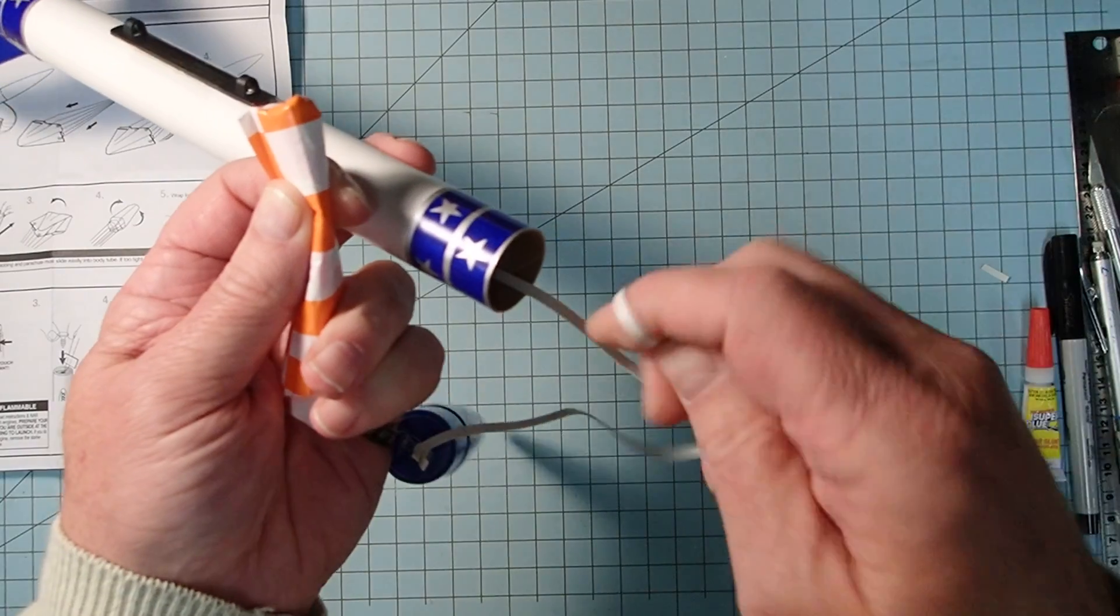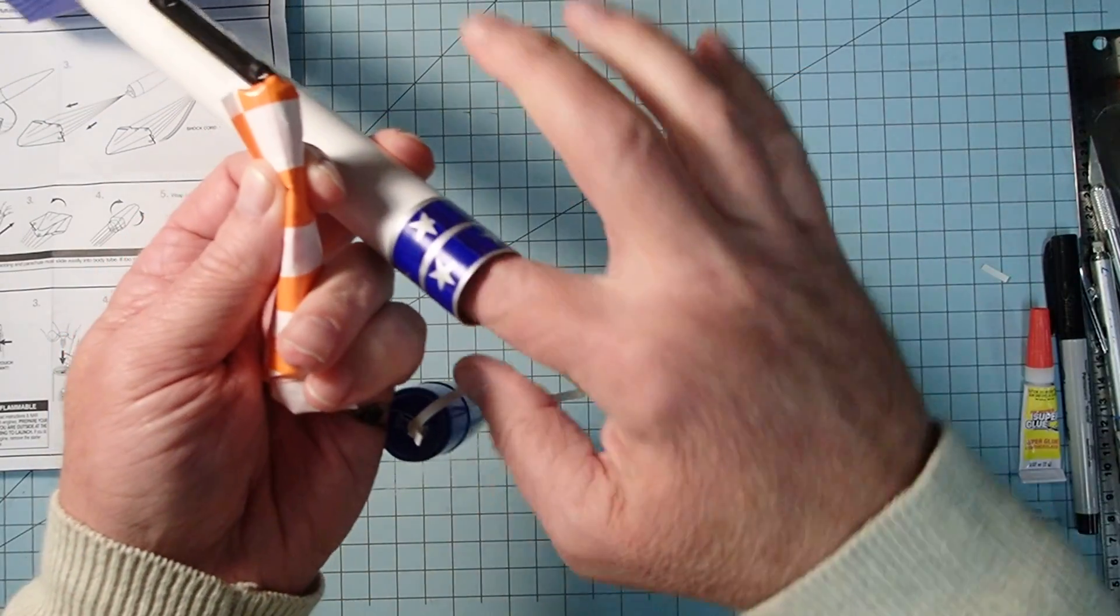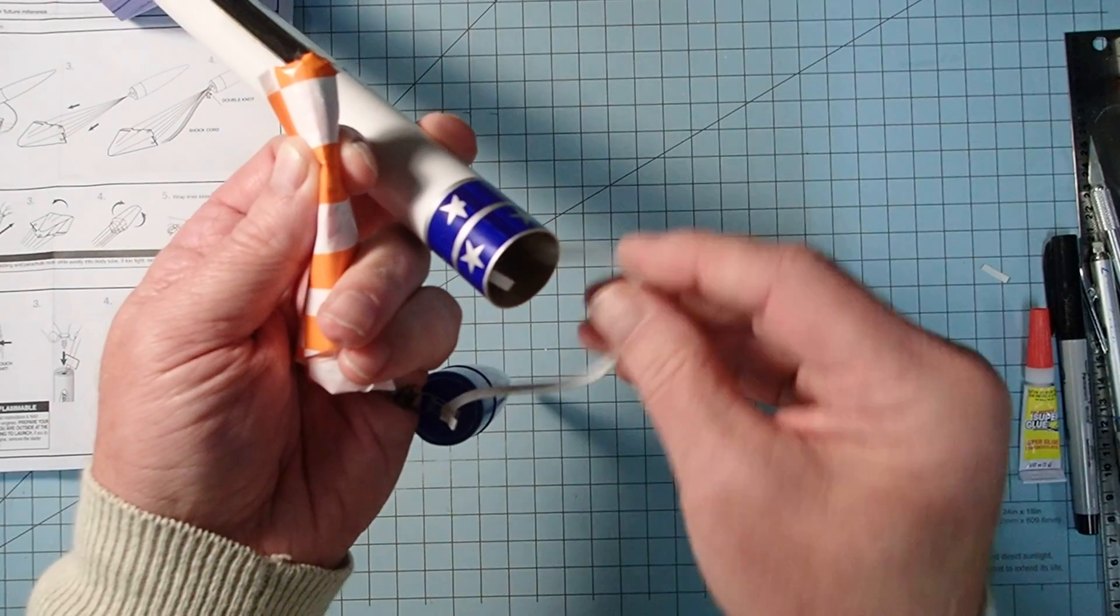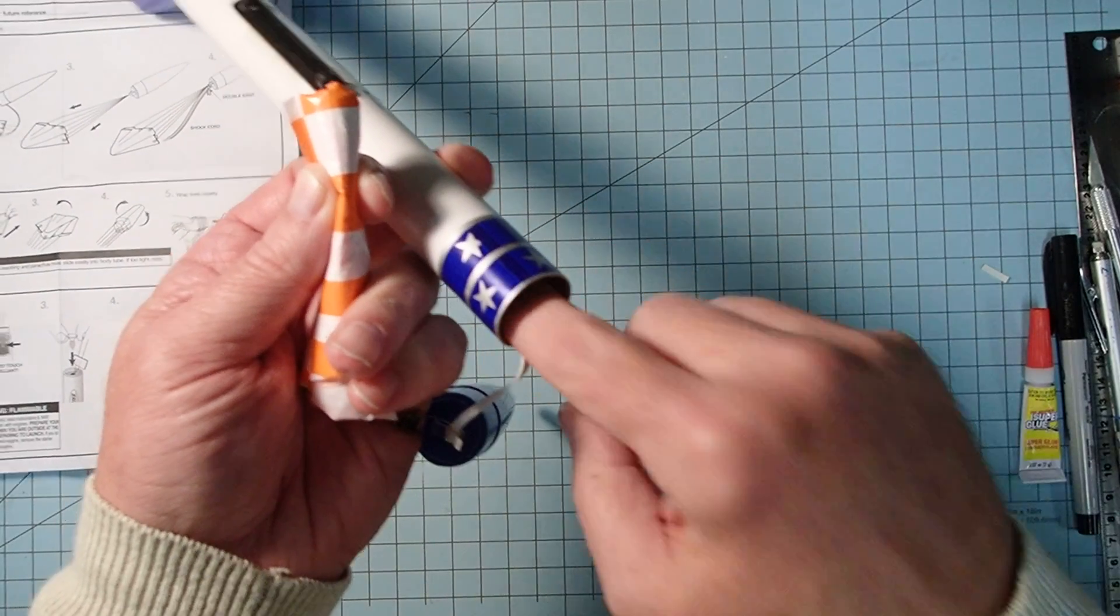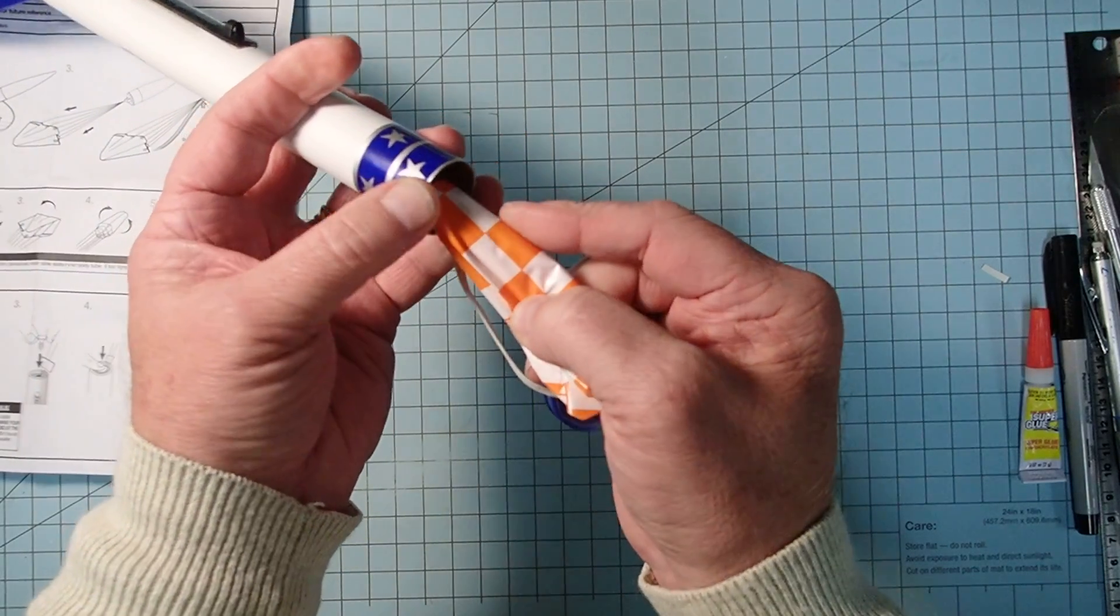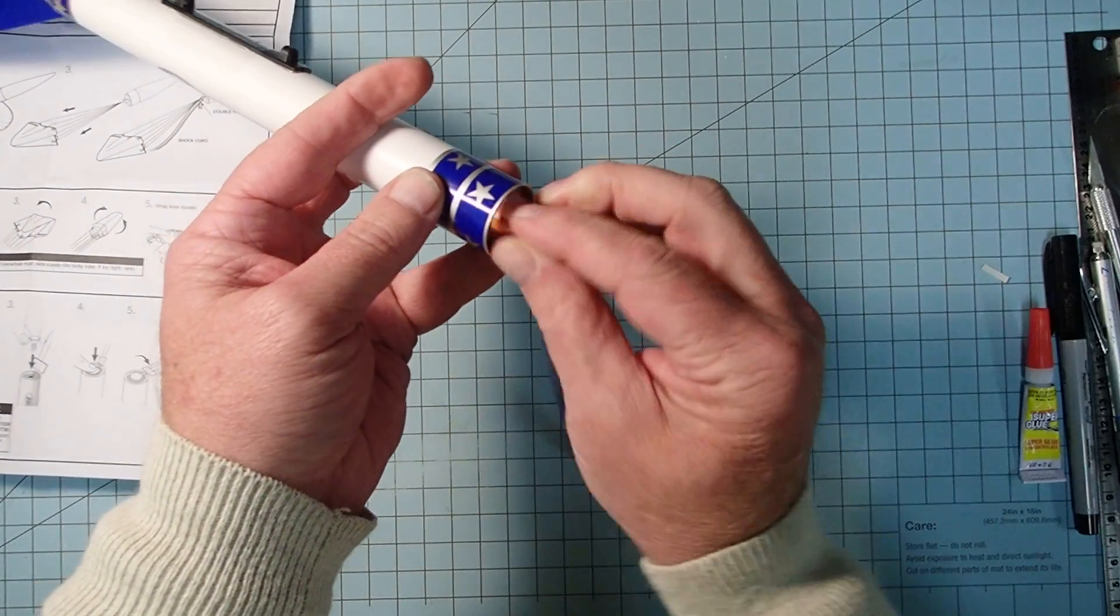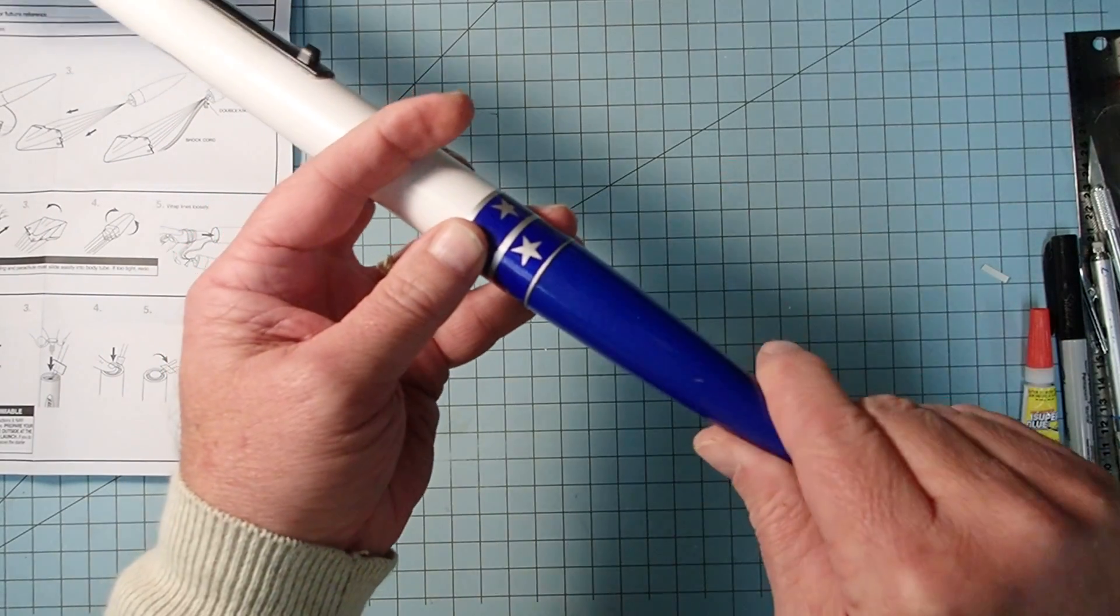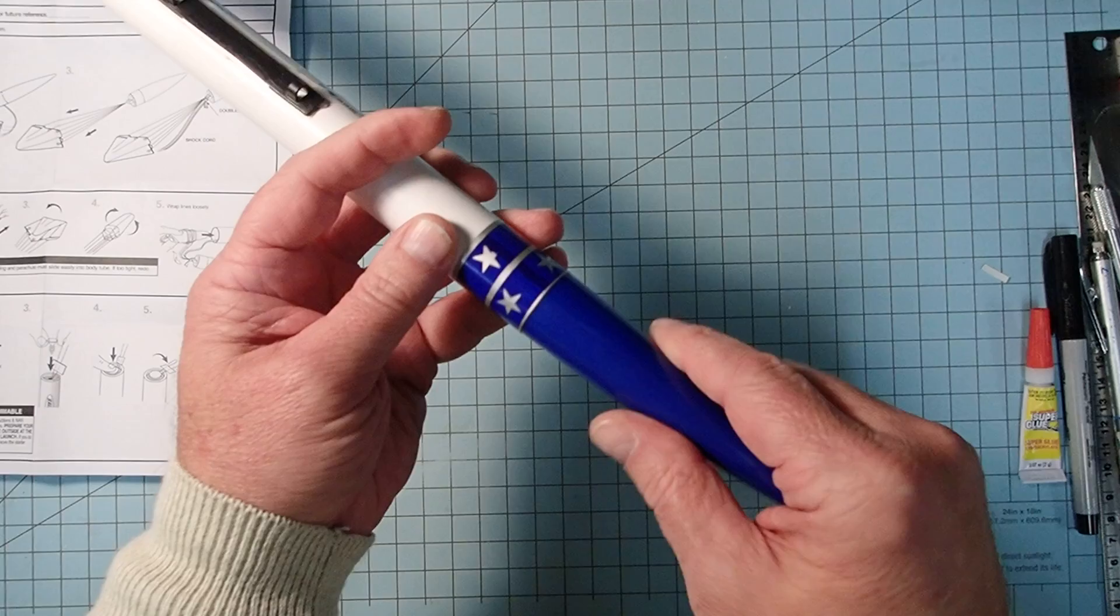All right. The shock cord goes inside. Now, if you're actually preparing this for launch, you want to put about three pieces of recovery wadding in before this so it protects the parachute. All right. But I'm just storing this, so I'm going to put my parachute down in there and then the nosecone on top of that. And that should slide fairly easily.